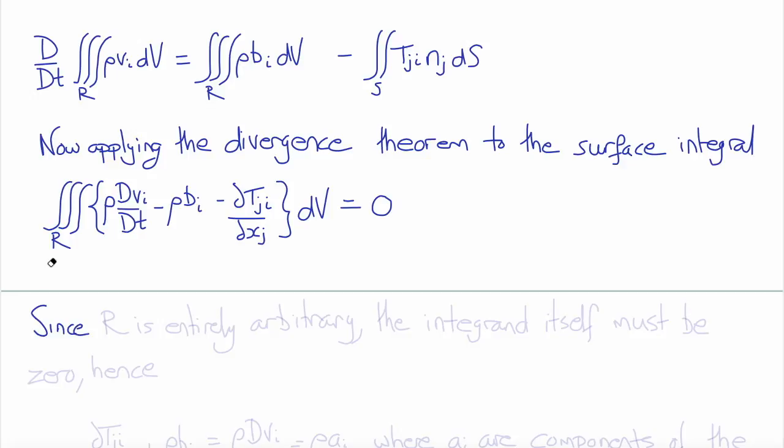As we've done before, we note that since the region R over which this integral must hold is entirely arbitrary, it must hold for any and all regions. That means the integrand itself, the expression inside the integral, must be zero.